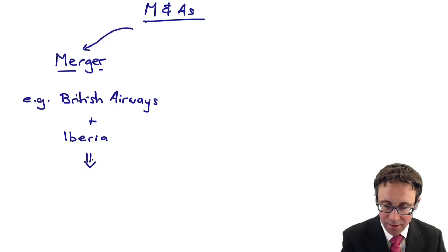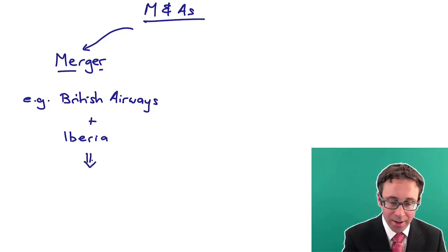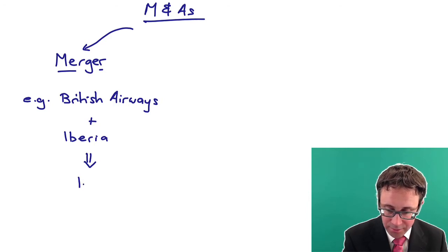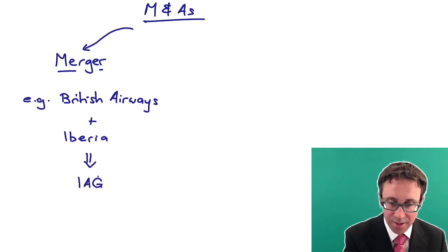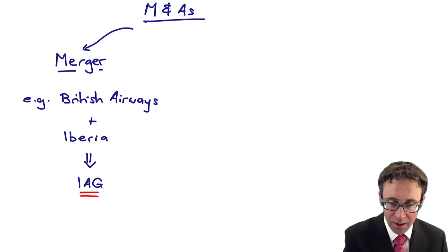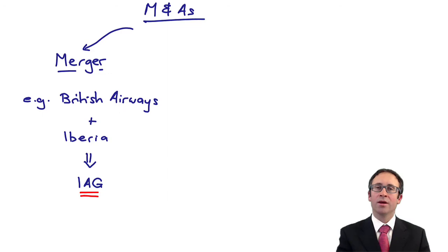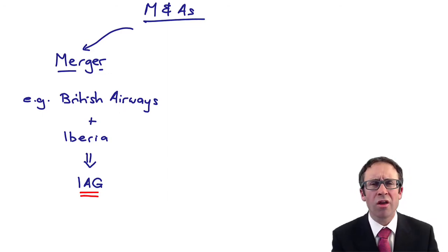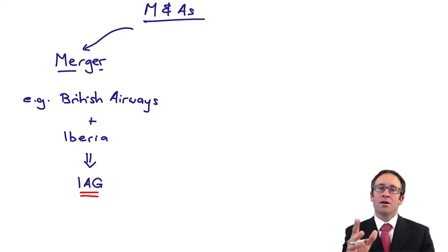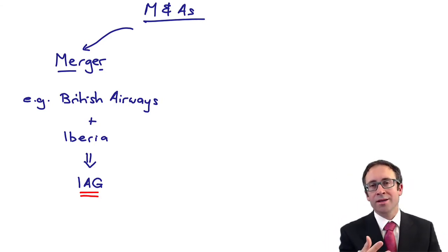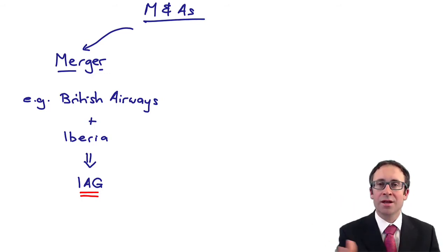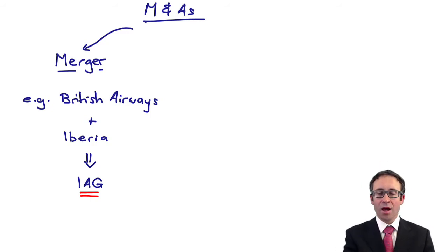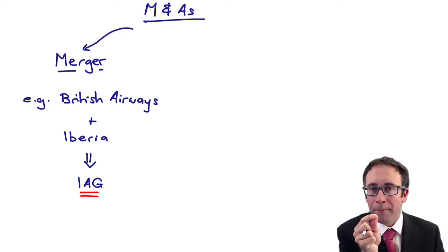They were two separate businesses that have combined. Now they are known as IAG, International Airline Group, or International Consolidated Airline Group. You still see British Airways planes and Iberian planes flying their routes from a brand perspective. But they were two businesses that came together, merged, to create a new entity with new shares in IAG. The key bit is that there were two companies and now there's one.